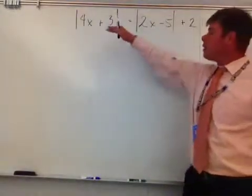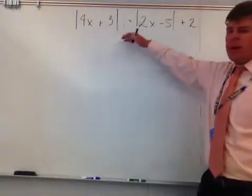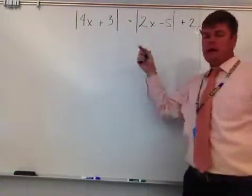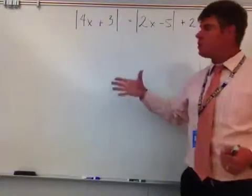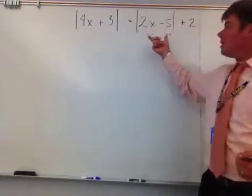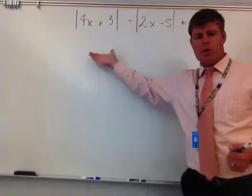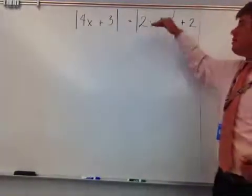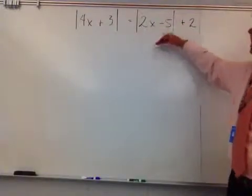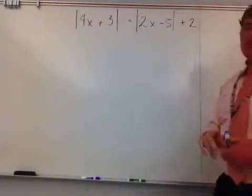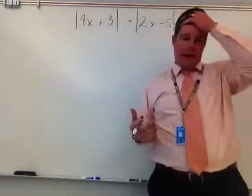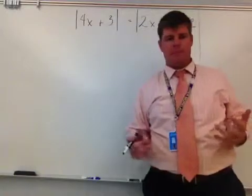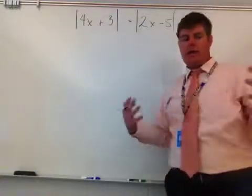Let's talk about another absolute value problem — an equation with two absolute value expressions in it. This one's going to be a little different than the other video. In that video, it was just two absolute value statements being equivalent to each other. Here, I have the absolute value of 4x plus 3 equivalent to the absolute value of 2x minus 5, and then I add 2 to that. There either has to be an answer, all real numbers, or no solution.